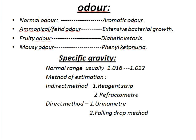Regarding urine odour: normal odour is aromatic. Ammoniacal or fetid odour is due to excessive bacterial growth. Fruity odour is due to diabetic ketoacidosis. Mousy odour is due to phenylketonuria.